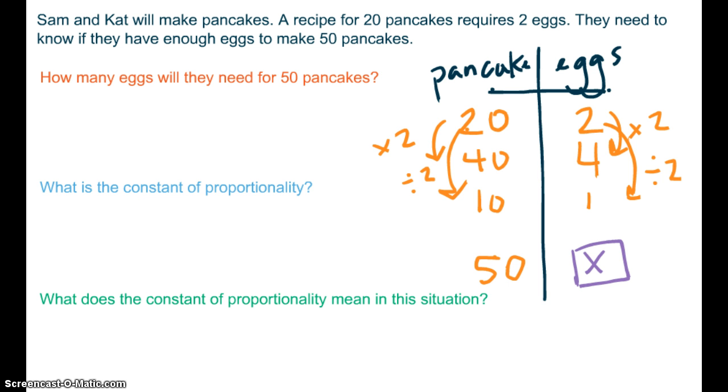Now look what I have. I have 4 eggs for 40 pancakes, 1 egg for 10 pancakes, and now I know that I can combine 40 and 10 to get 50. And I can combine 4 and 1 to get 5 eggs. That is one way to scale this problem.